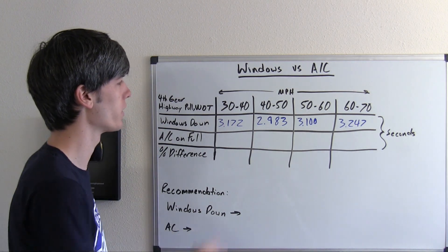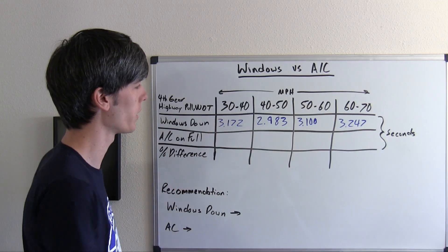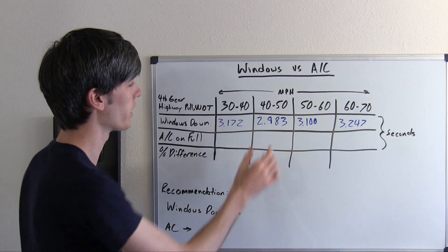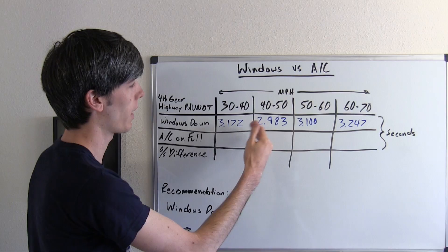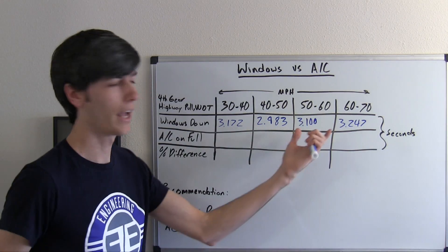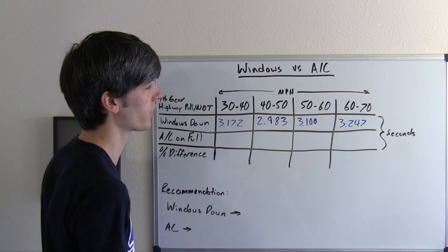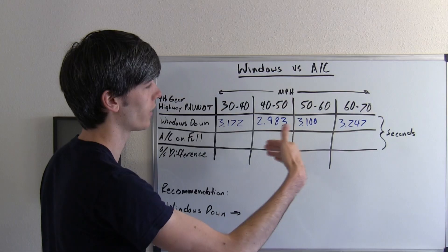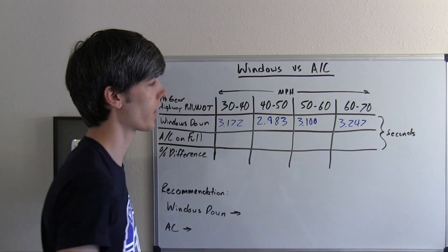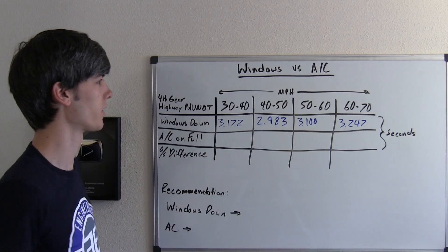Here we have it broken down for the different time intervals. 3.172 seconds from 30 to 40. 2.983, you can see it gets quicker as it's getting more power. It gets into the higher RPMs and then it actually gets slower again once it gets up to the higher speeds as drag increases on the vehicle. 3.1 from 50 to 60, and even though power is still increasing as you get into the higher RPMs the amount of drag is increasing as well. 3.247 seconds from 60 to 70.